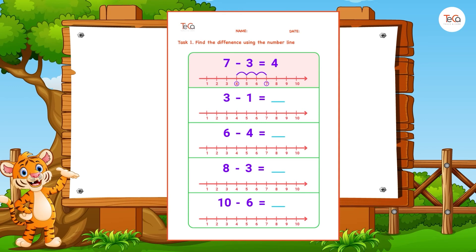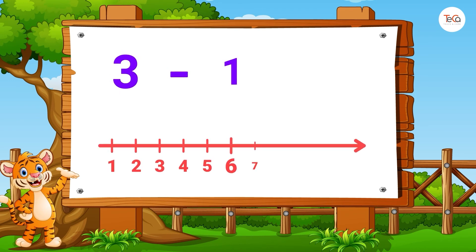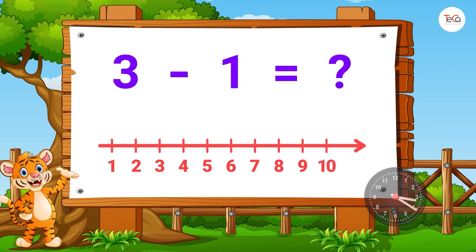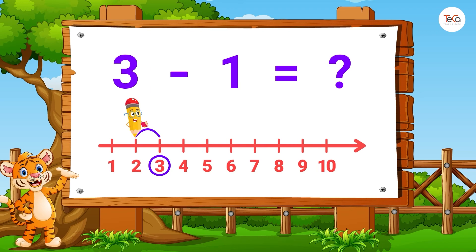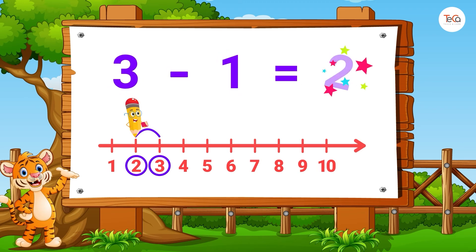Now, let's check if your answers are correct. To find 3 minus 1, start from number 3. Then jump one number to the left. Here we stop at number 2. So, 3 minus 1 equals 2.